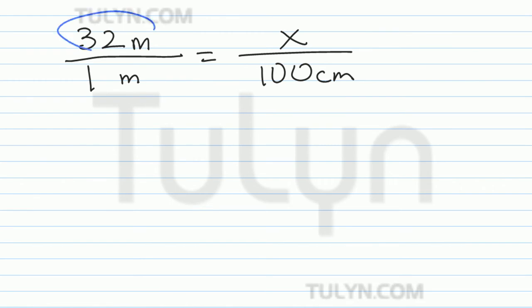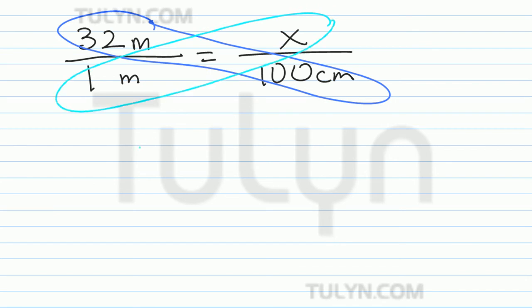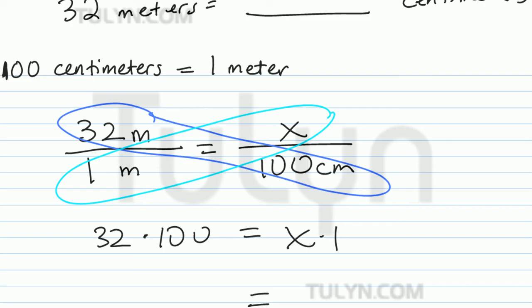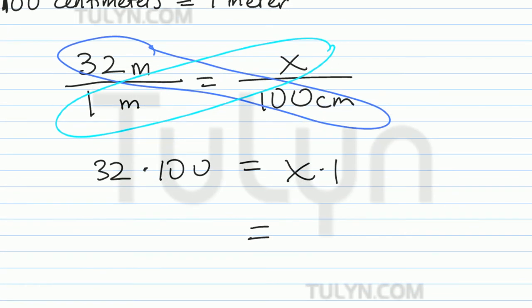Do cross multiplication. So we've got 32 times 100 equals x times 1, and we're letting x equal the missing number of centimeters.